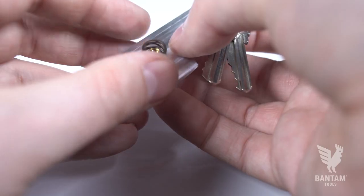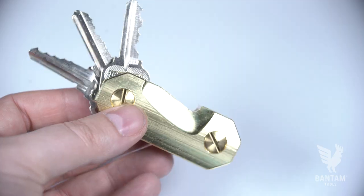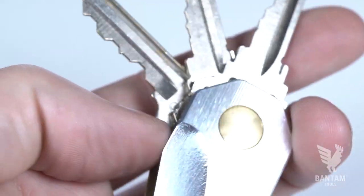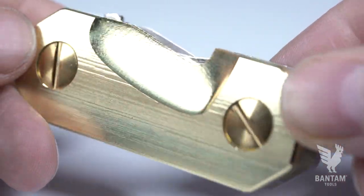Fasten both sides together with your keys in between using a spring on the empty post to maintain pressure. Again, for more details, check out the full guide at BantamTools.com.